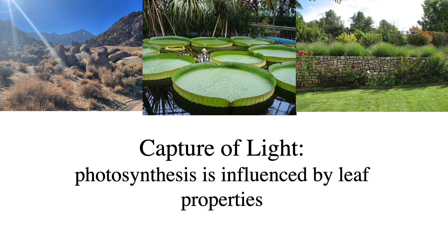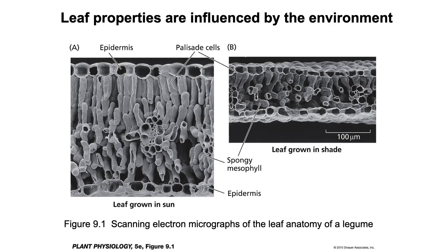Let's discuss first the capture of light. Photosynthesis is influenced by leaf properties. These are scanning electron micrographs of leaf anatomy grown in different environments. Note that the sun leaf is much thicker than the shade leaf, and the palisade cells of the sun leaf are much longer.